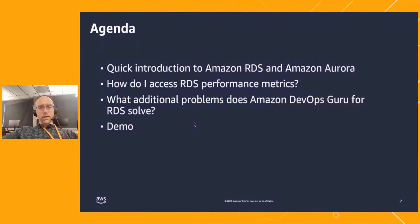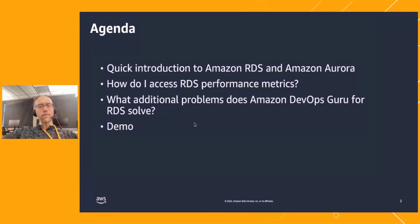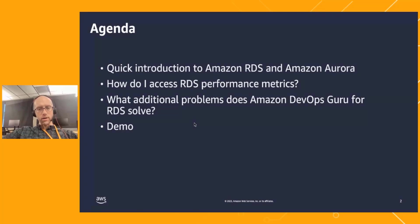We're going to go through four topics. One is a quick introduction to RDS and Amazon Aurora, just to make sure that folks know what those things are. The second is a brief overview of how you can access RDS performance metrics today — basically the tools that you can use to monitor your RDS databases. Third, I'll explain the additional problems that Amazon DevOps Guru for RDS solves. And lastly, I'll give a demo.